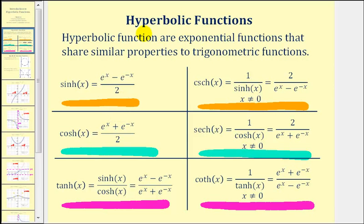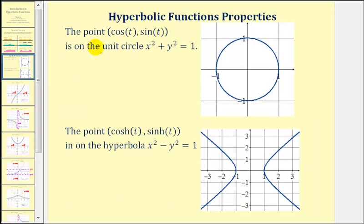Now let's talk about why they're called hyperbolic functions. We know if we have a point where the x-coordinate is cosine t and the y-coordinate is sine t, the point would fall on the unit circle, or the circle x squared plus y squared equals one, pictured here.